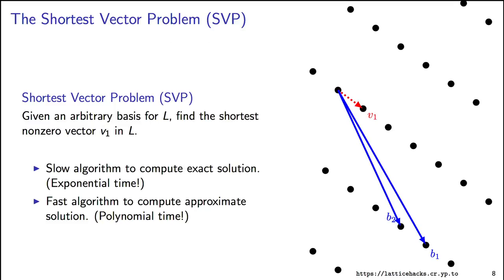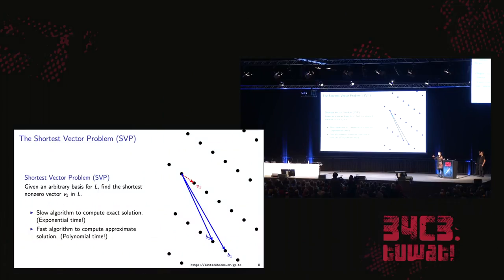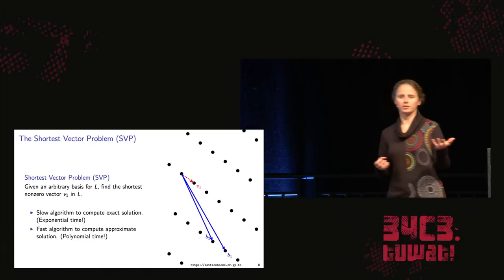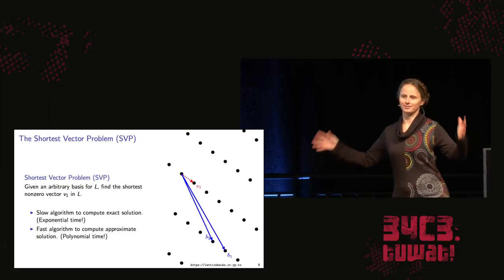Now we understand what a lattice is — why do we care? For this talk, most of what we're going to do with lattices is find short vectors in them. We saw that we could have multiple bases for the same lattice, some with super long vectors, but we're interested in finding short vectors given an arbitrary description of the lattice. This is called the shortest vector problem. The fastest algorithms run in exponential time in the dimension — two to the n — but you can compute an approximation in polynomial time. Hard to solve exactly, easy to solve approximately.